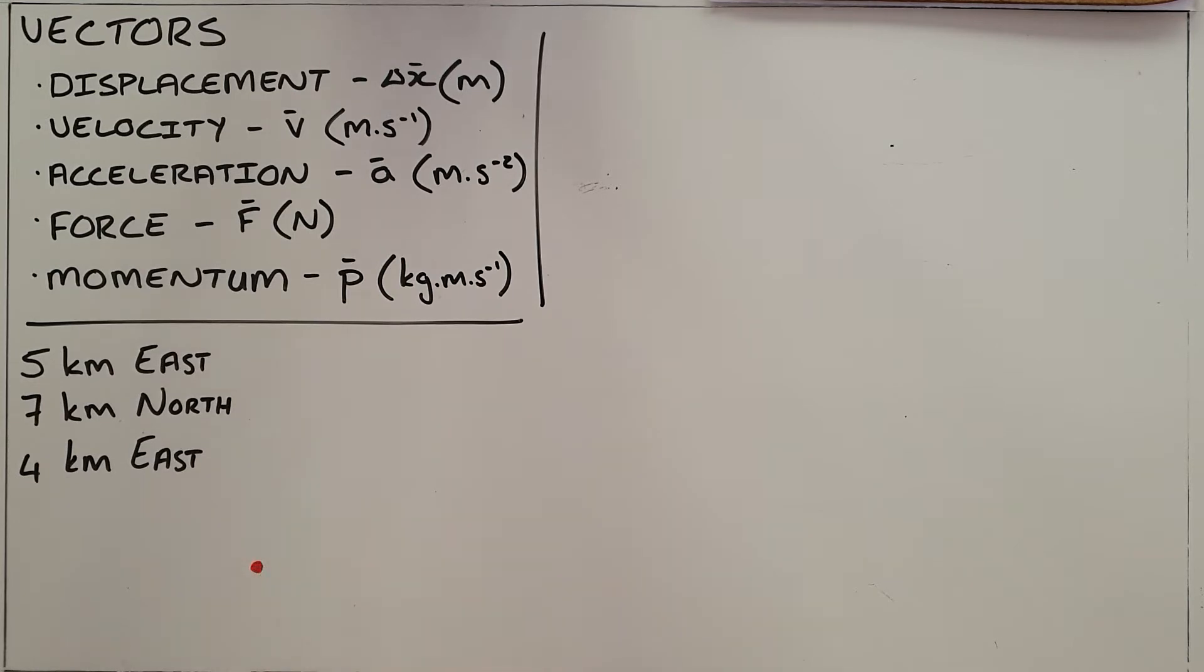All of them start with this person in the same position. The first one shows in the order that it's done a movement of five kilometers east followed by a movement of seven kilometers north which is then followed by a movement of four kilometers east to end up at the final point.